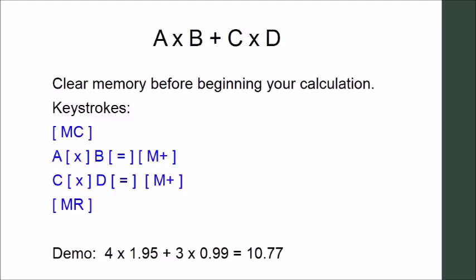Let's start with calculating A times B plus C times D, where A, B, C, and D represent any number. We start by clearing the memory by pressing the memory clear. Then we do the A times B and C times D in parts. First we will enter A times B equals memory plus. Then C times D equals memory plus again. We will recall memory to get our answer.